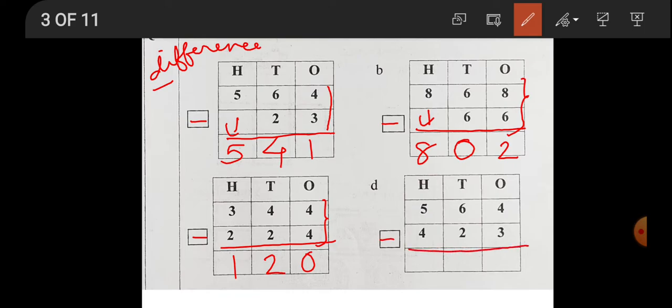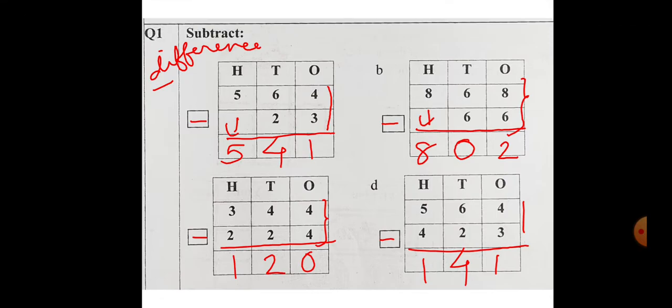Again write subtraction. And difference means minus. Again 4 fingers up. 3 fingers put down. How many left? 1. So write 1. 6 fingers up. 2 fingers down. How many left? 1, 2, 3, 4. So 4. 5 fingers up, 4 fingers down. How many left? 1. So here 1 you will write.